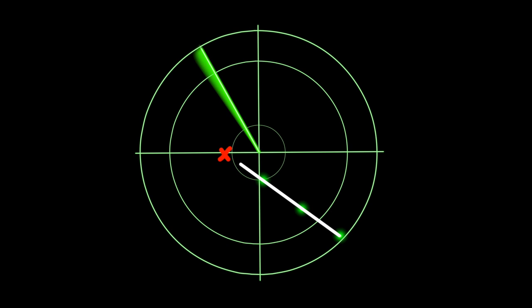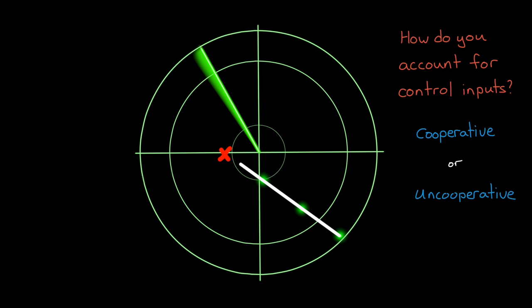So if you were the one flying the airplane, and you knew that you didn't command any adjustments to it, no control inputs, then you could expect with reasonable certainty that the plane would maintain its current speed and direction, so the prediction at the red X is probably pretty close. But what if you weren't flying the plane, but instead tracking it remotely? How do you account for the control inputs in this situation? Well, it depends on whether we're talking about cooperative tracking or uncooperative tracking.